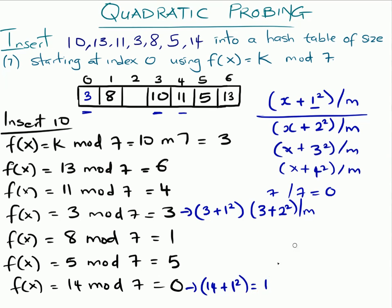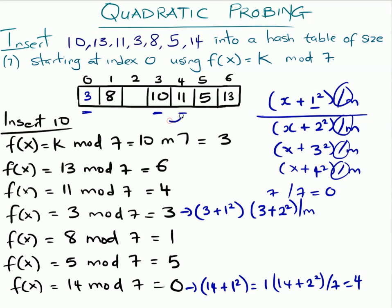So we use the second formula: 14 + 2² = 18, and 18 mod 7 is 4. But position 4 is already filled. We try again with n=3: 14 + 3² = 23, and 23 mod 7 is 2. Position 2 is empty, so 14 goes at position 2.